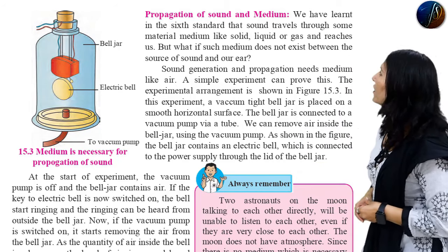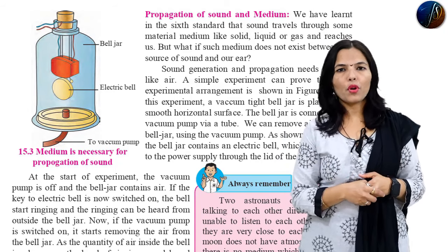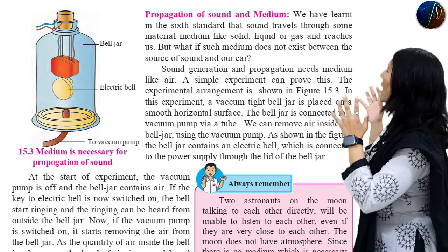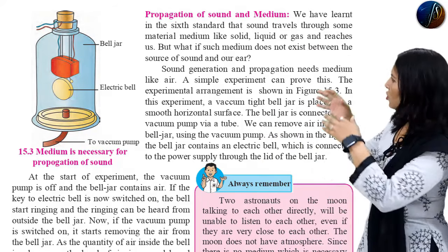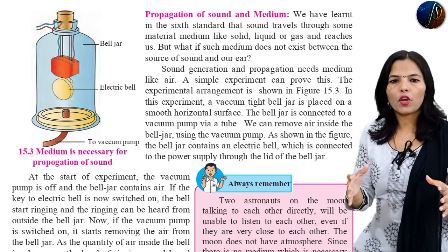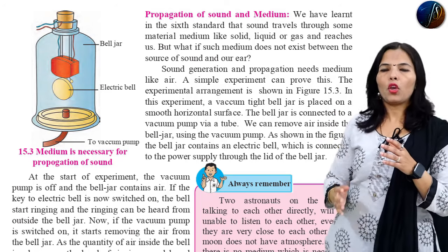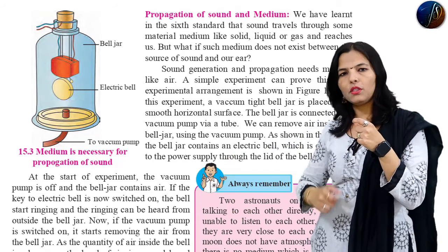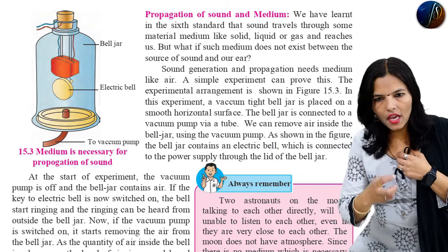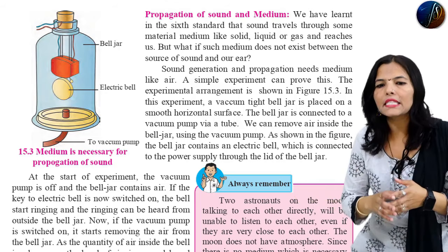I have given a simple experiment in diagram 15.3. A vacuum-tight bell jar is placed on a smooth horizontal surface, and it is connected to a vacuum pump. The vacuum pump is used to remove the air from inside the bell jar. Inside the bell jar there is an electric bell connected to a power supply.